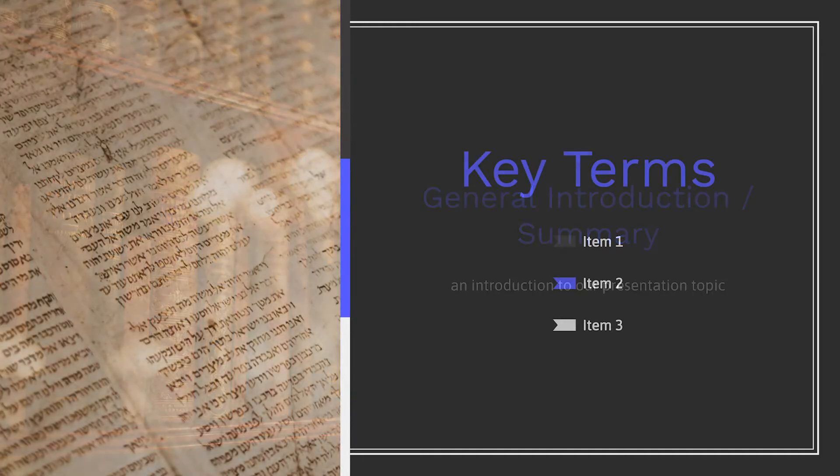The fifth is the key term slide. Listing out the key terms on the topic domain is helpful to prevent any confusion that may occur in the content of the upcoming slides. This is where you can also list the key points that you will be talking about and introduce them through key terms.